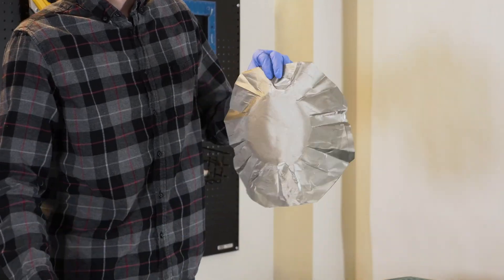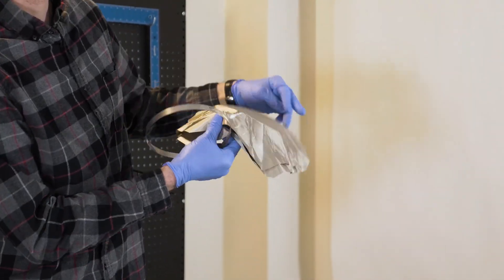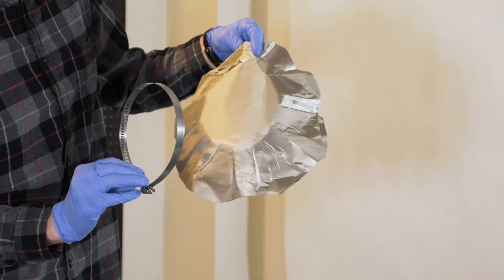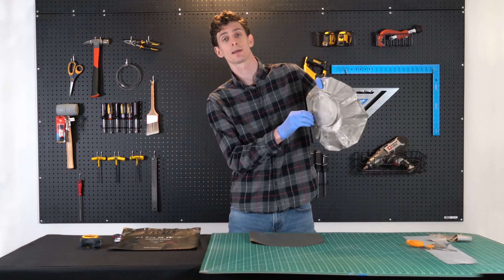So this is a finished product here. It's just a dual layered Faraday cover that'll fit for your meter. You just take your hose clamp, slide it right on. There's nothing to it.